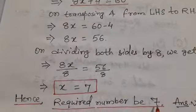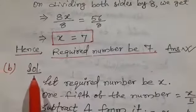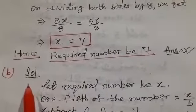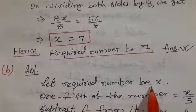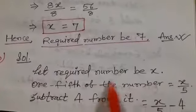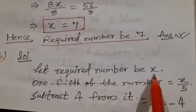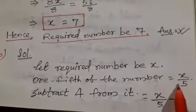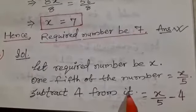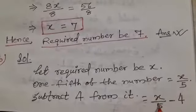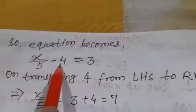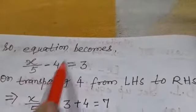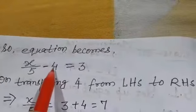The second question is: one-fifth of a number minus 4 gives 3. Let the required number be x. One-fifth of this number becomes x multiplied by 1/5, or simply x/5. Now subtract 4 from it — it becomes x/5 minus 4. So the equation becomes x/5 − 4 = 3.